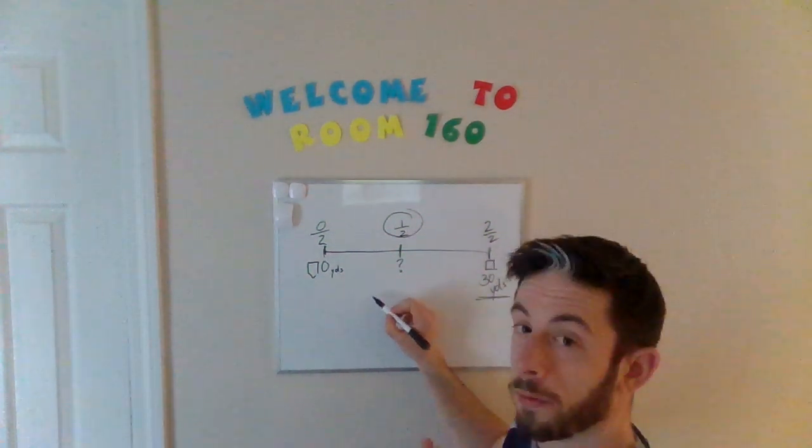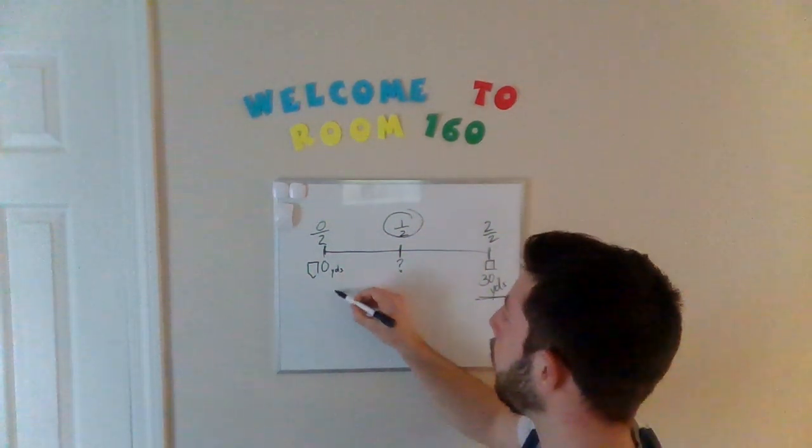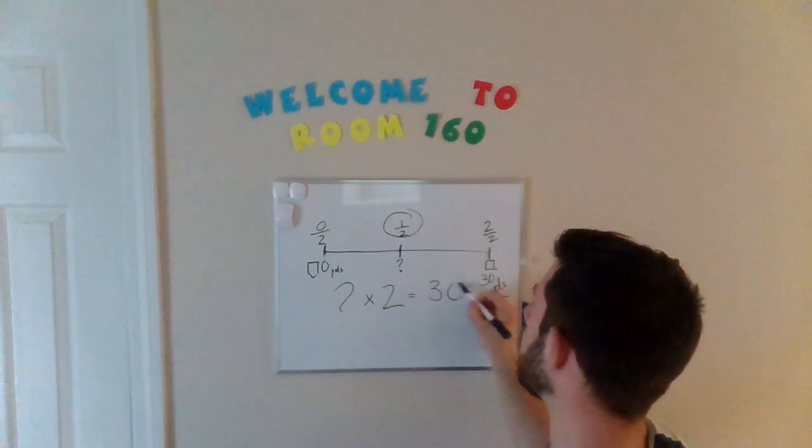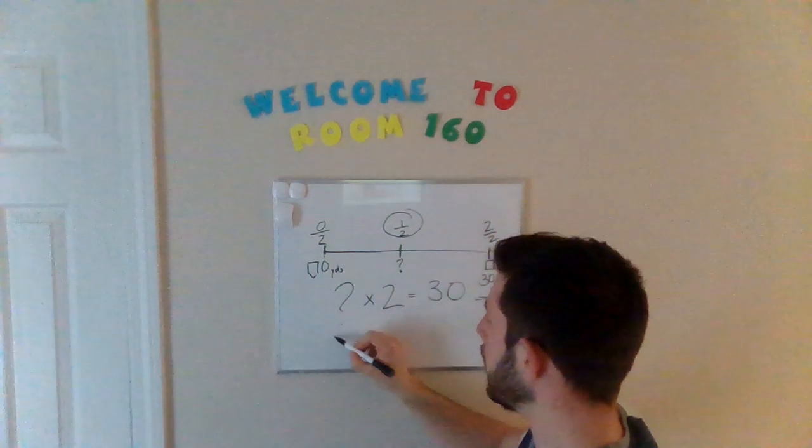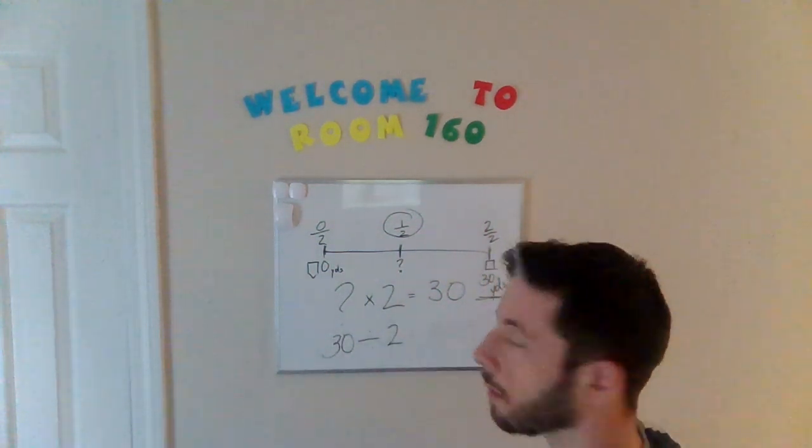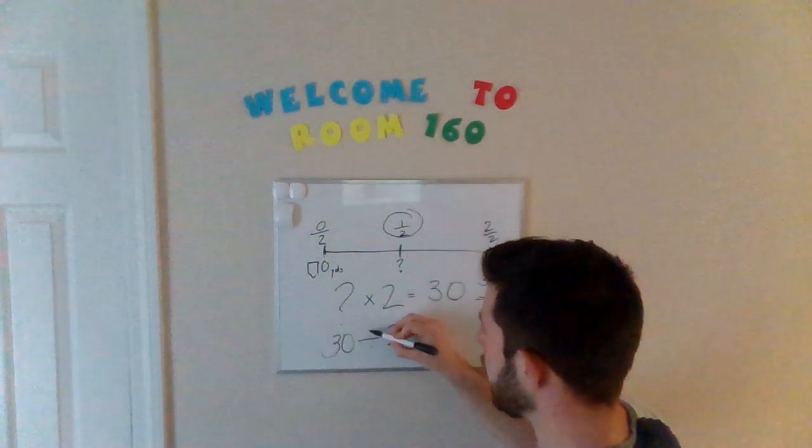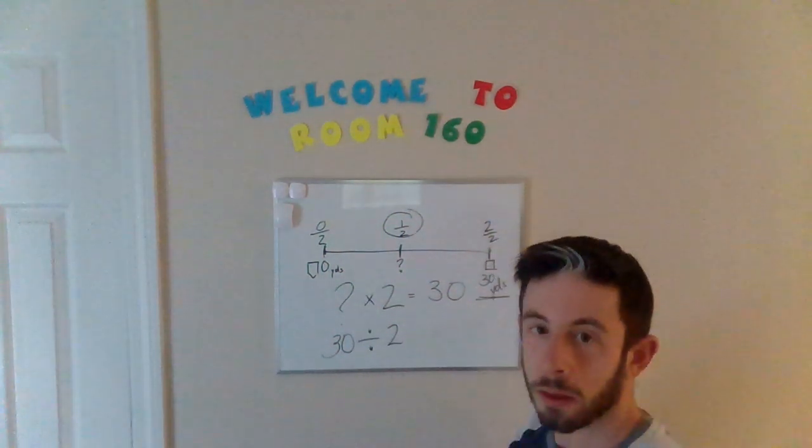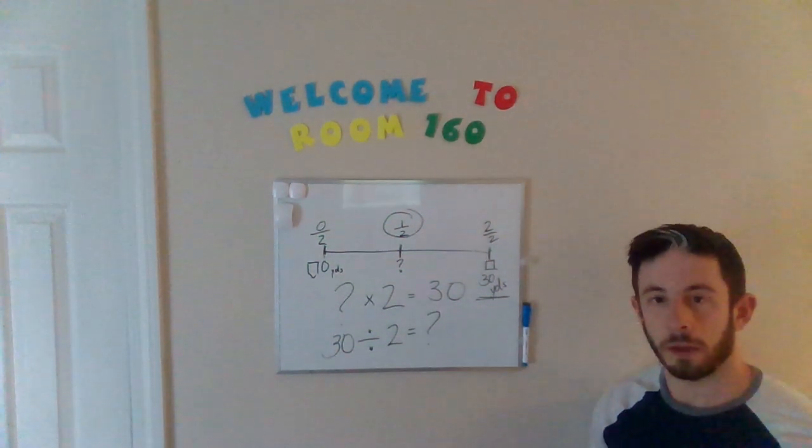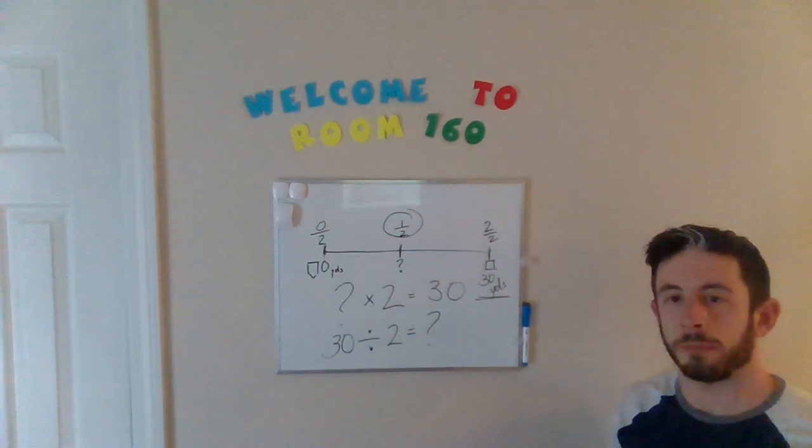You got to think of a few different things. What number multiplied by two is going to equal 30? Or if we split 30 in half, split it up into two equal parts, we divide it, then what will that number be? So take some time to think about how you can approach this.